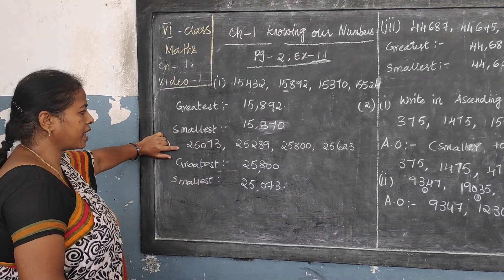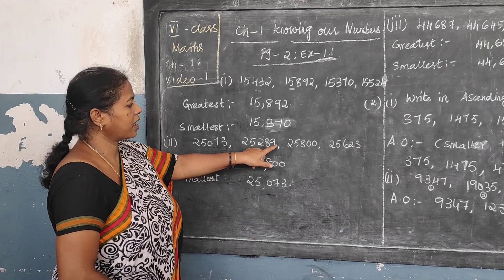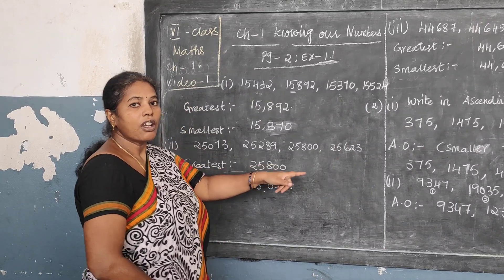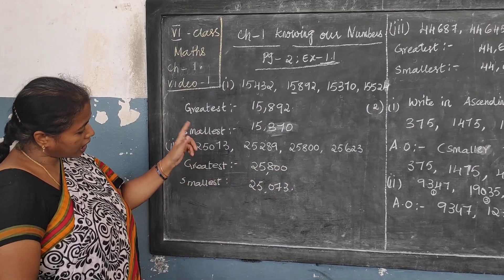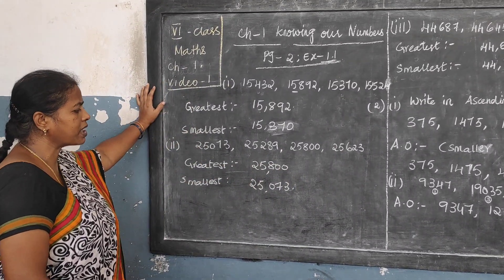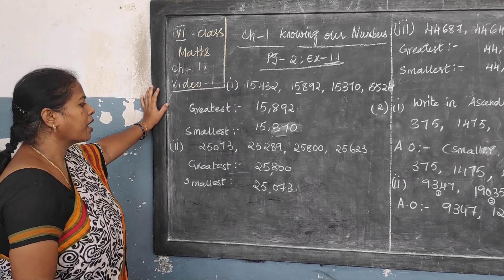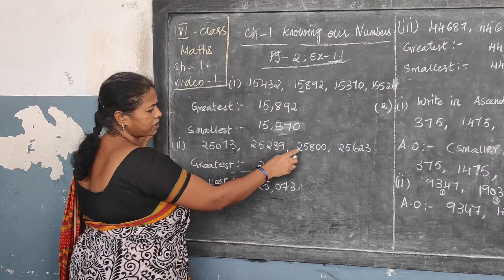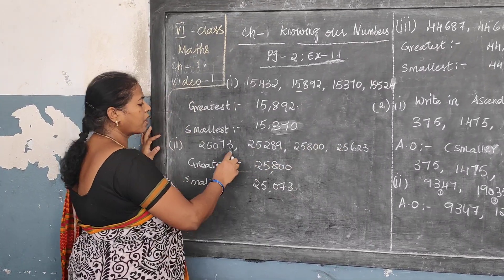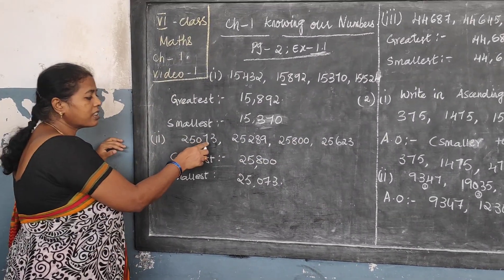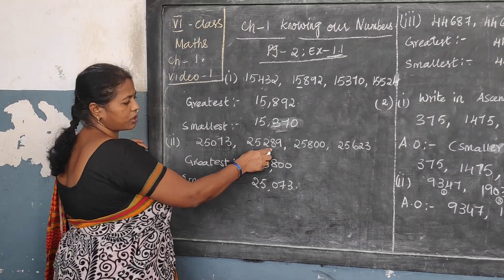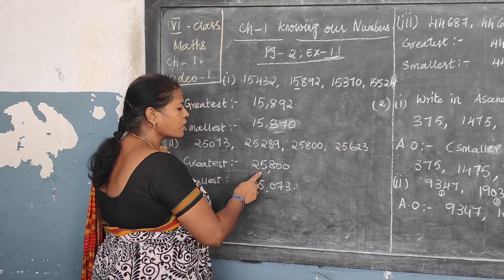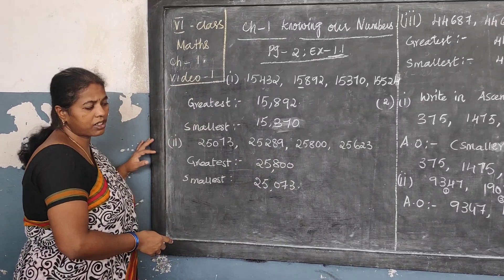Now the second one, children. They gave: 25,073 — 25,289 — 25,800 — 25,623. From this, they are telling you to check the same way: which is greater and which is lower. All are 25,000 only. Now you check from the hundreds digit: 73, 289, 800, 623. So 25,800 is naturally greater.